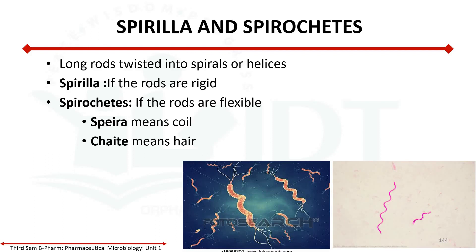The next form is the pleomorphic form. Bacteria which are variable in shape and lack a single characteristic form are known as pleomorphic. An example is Mycoplasma, which is pleomorphic because it lacks a cell wall.